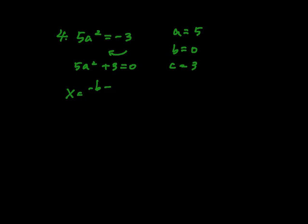x equals negative b plus or minus square root b squared minus 4ac all over 2a.